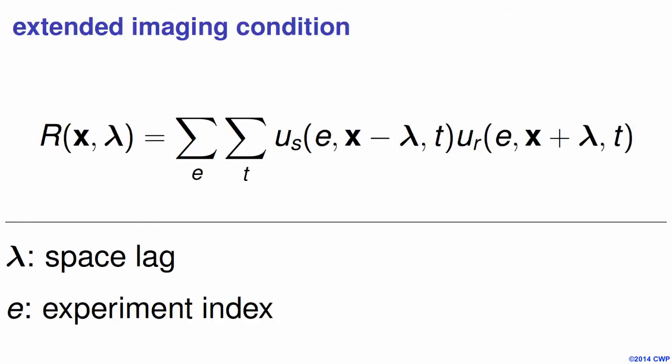This leads to the similarities of this simple example with wave field tomography. In wave field tomography, what was the correlation of two 1D functions is now a correlation of wave fields, as Paul explained. Here we are doing a spatial correlation, where lambda is a space lag and we sum over all experiment indices — these could be shot gathers, plane waves, or anything used as an experiment index.